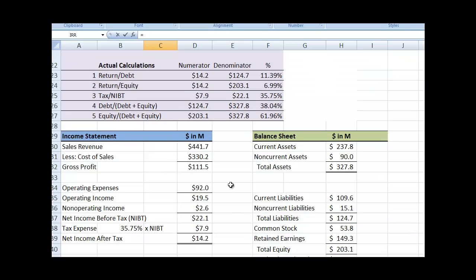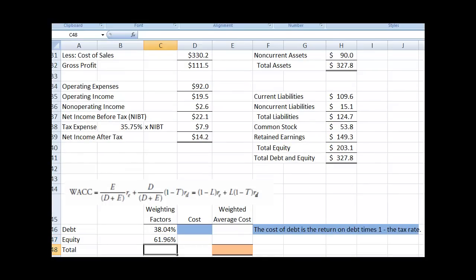And then we're going to do the same thing with equity. We have equity to debt and equity. So we're just going to pick up the 61.96%. And the two should equal 100%. And I'll total those up with our auto sum. And there you go, we have 100%.